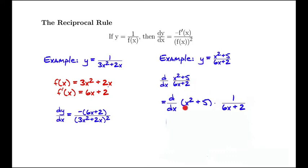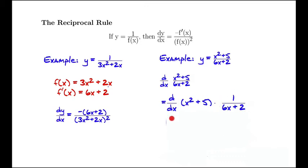It's (x squared plus 5) times (1 over 6x plus 2). Viewing this as a product, we can apply the product rule to find the derivative, and on the last piece of the product rule we'll have to use the reciprocal rule.